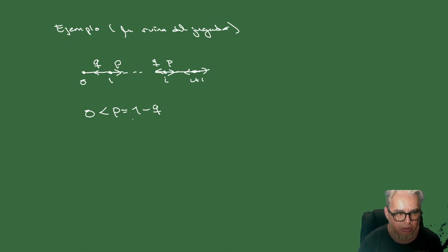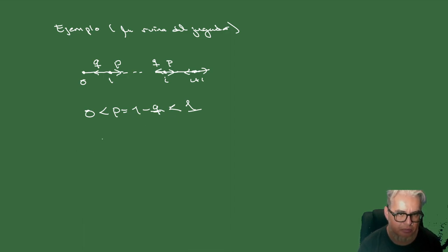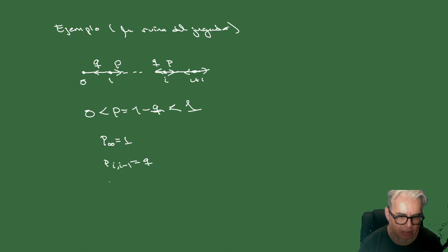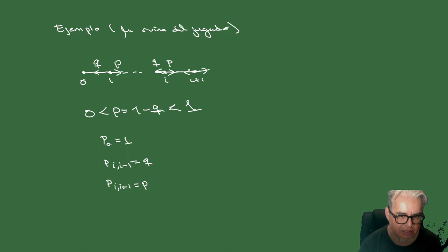La p es una probabilidad positiva, 1 menos q, y es menor que 1. Las probabilidades de transición hacia el 0 en el tiempo 0 es 1. La probabilidad de ir de i a i menos 1 es igual a q. La probabilidad de ir desde i a i más 1 es p. De quedarse en el 0, estando en el 0, esa probabilidad es 1.